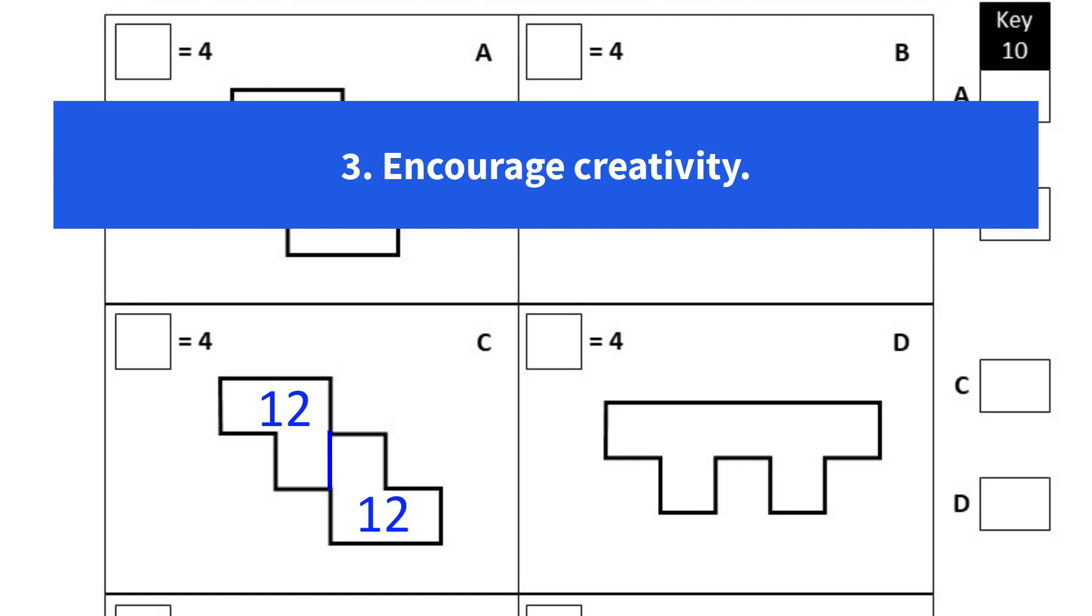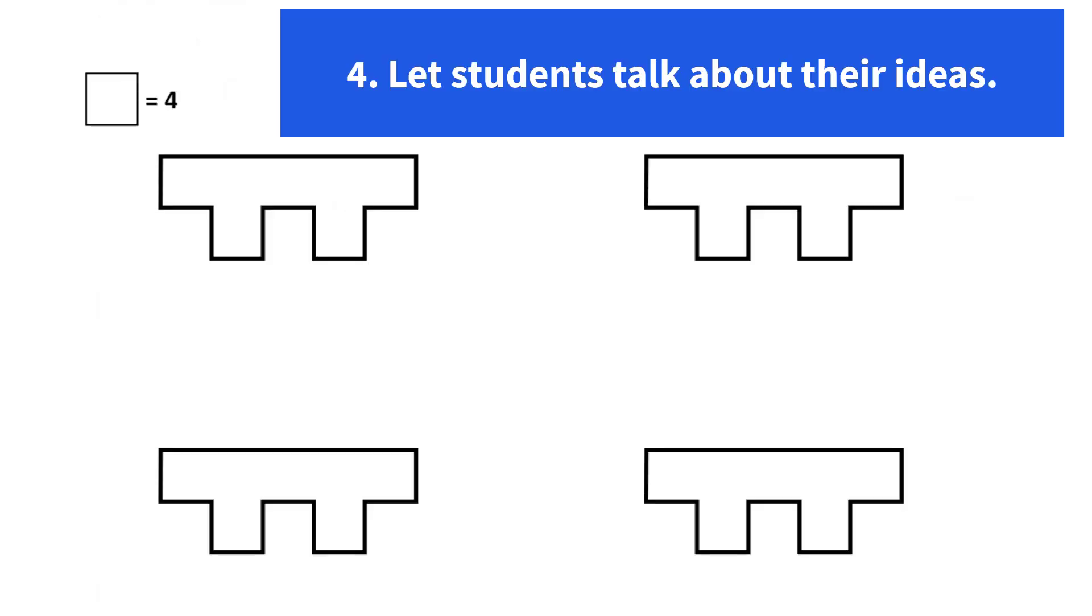The fact that students see it differently is very helpful, and it opens up the door for tip number 4, which is let students talk about their ideas. This example shows how 4 different students working with the same shape may see it very differently. In the end, they'll all have the same product, but they have a chance to share their ideas and their thinking with each other.